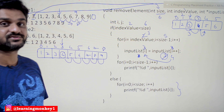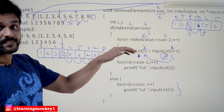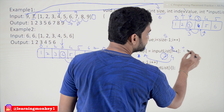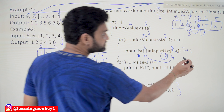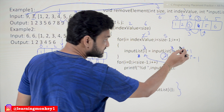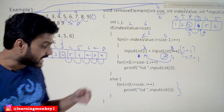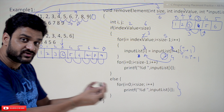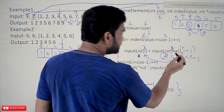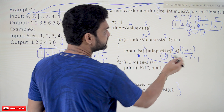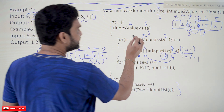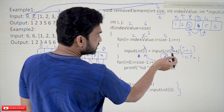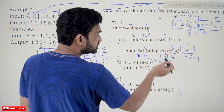What we want to store at position i is the value at position i+1, not i++. The statement should be inputList[i] = inputList[i+1]. i+1 just reads the next position's value without modifying i, whereas i++ was incorrectly reading the same position. This is the change that needs to be made.